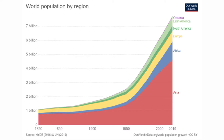Let's look first at demographic trends. The world population has grown dramatically since 1950. You can see from the chart that the world population grew from 2.5 billion in 1950 to 7.5 billion currently, with growth primarily in Asia and Africa.